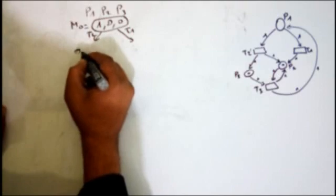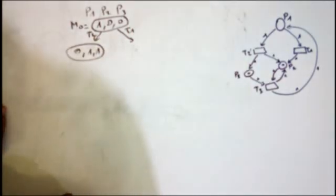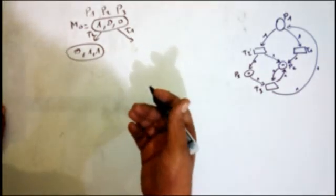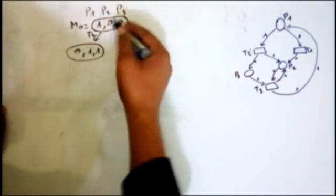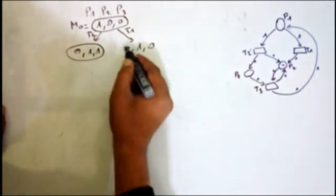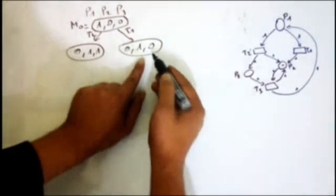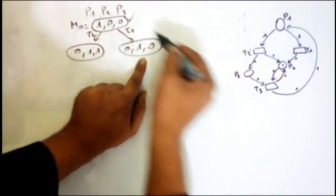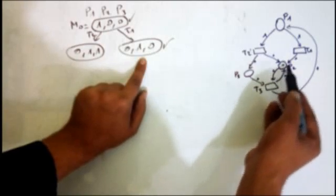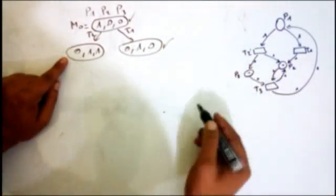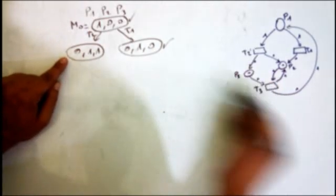So I get (0, 1, 1). Now, from the marking (1, 0, 0), if I fire T1, there is no transition fireable from the resulting marking — it's a dead end. From the marking (0, 1, 1), the only fireable transition is T3.